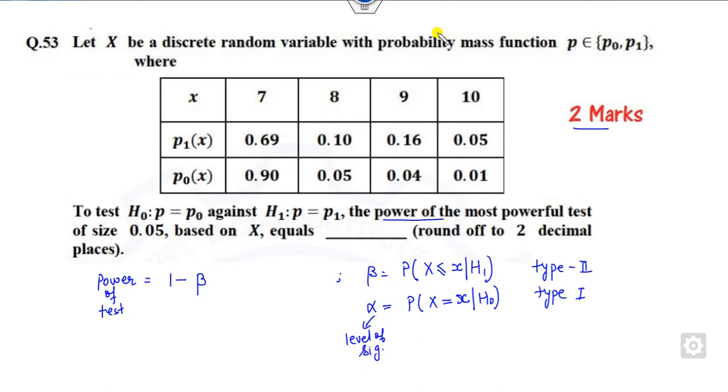Now you can read the statement and see what will happen. This 0.05 is the level of significance is given to you, means alpha is given to you and you have to find the value of the X. What is the H0? P0. So it means look at the value of the P0 and find the value of the X corresponding which P0 is my 0.05. This is my 0.05. So X is my 8.